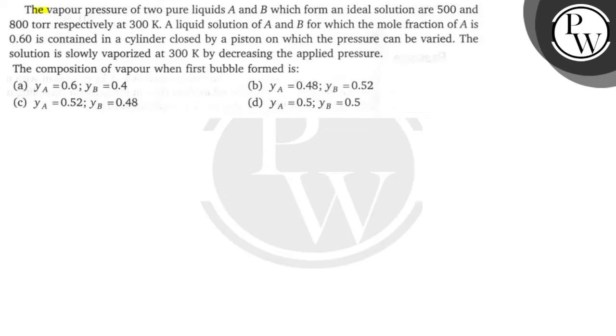Hello, let's see this question. The vapor pressure of two pure liquids A and B which form an ideal solution are 500 and 800 torr respectively at 300 Kelvin.